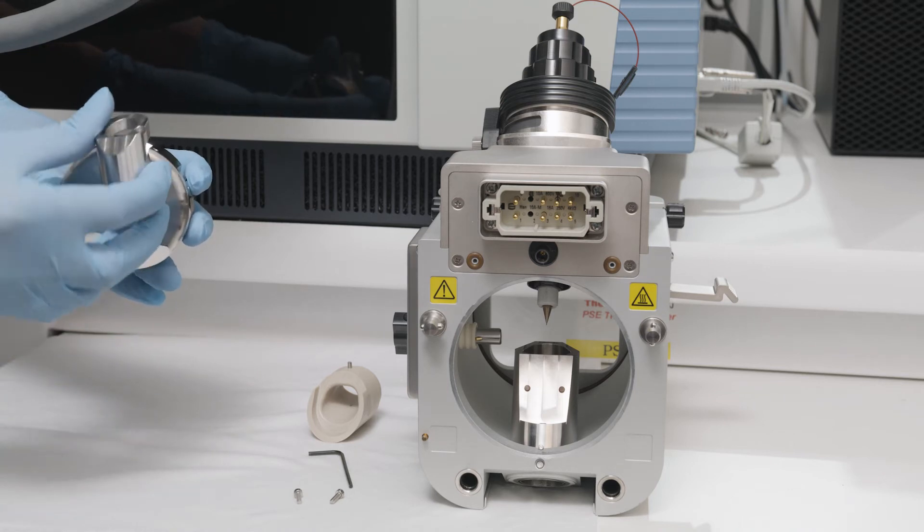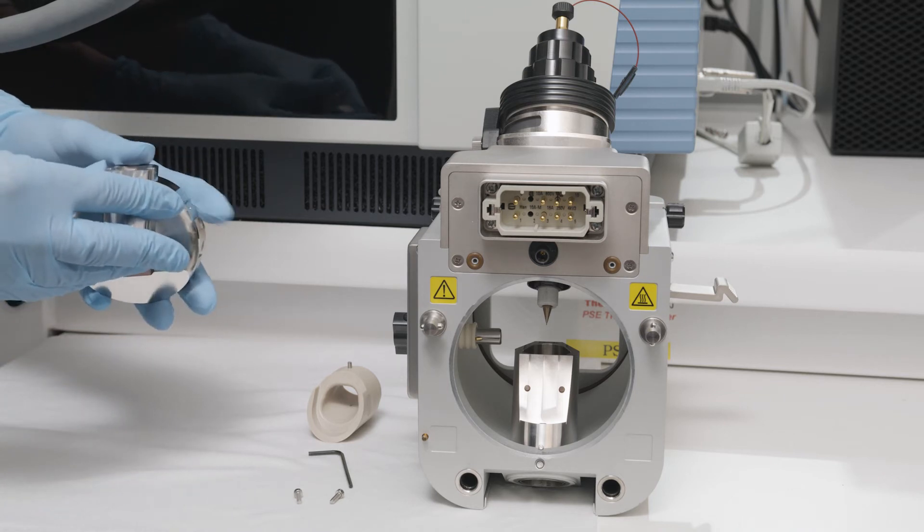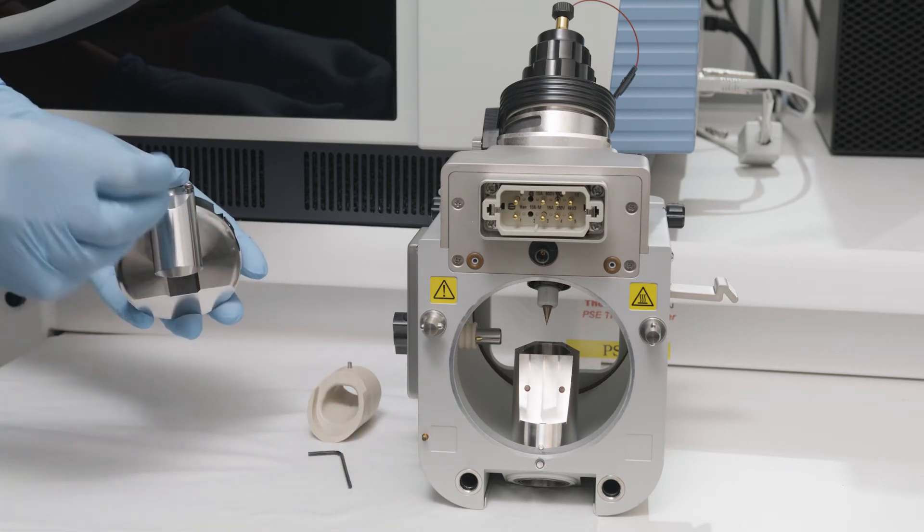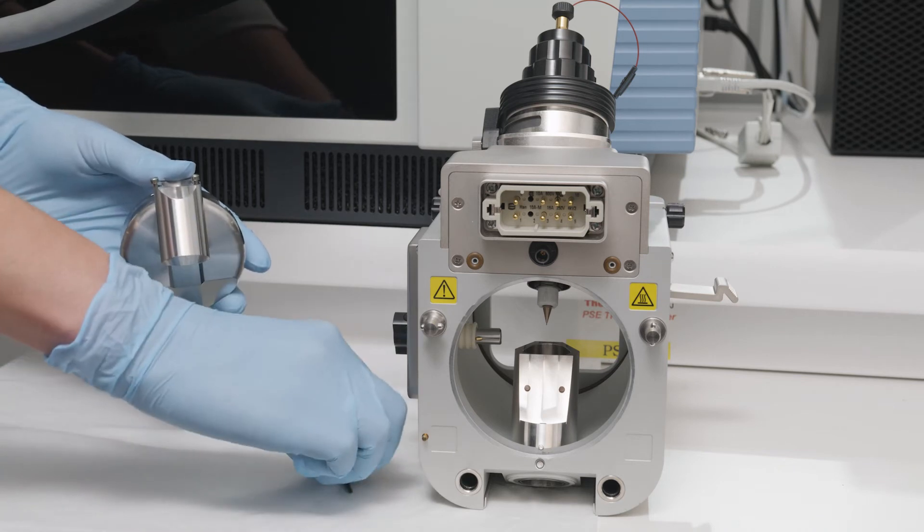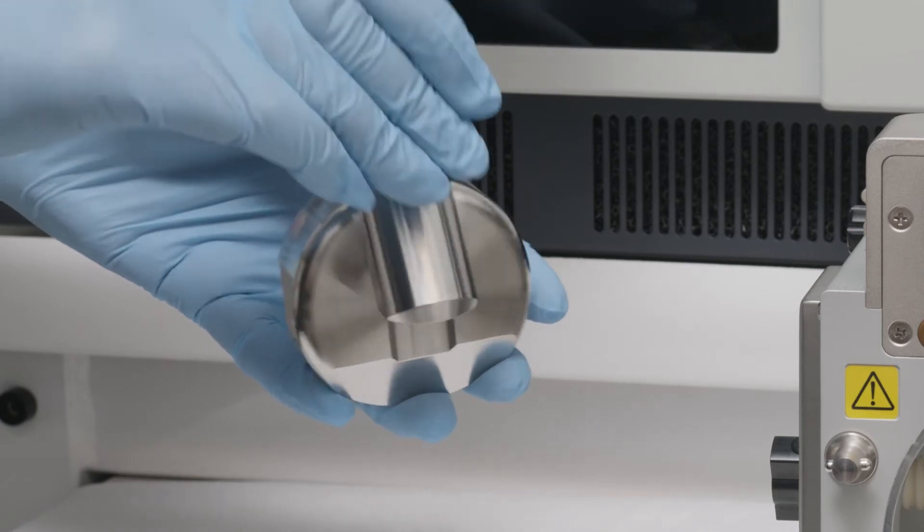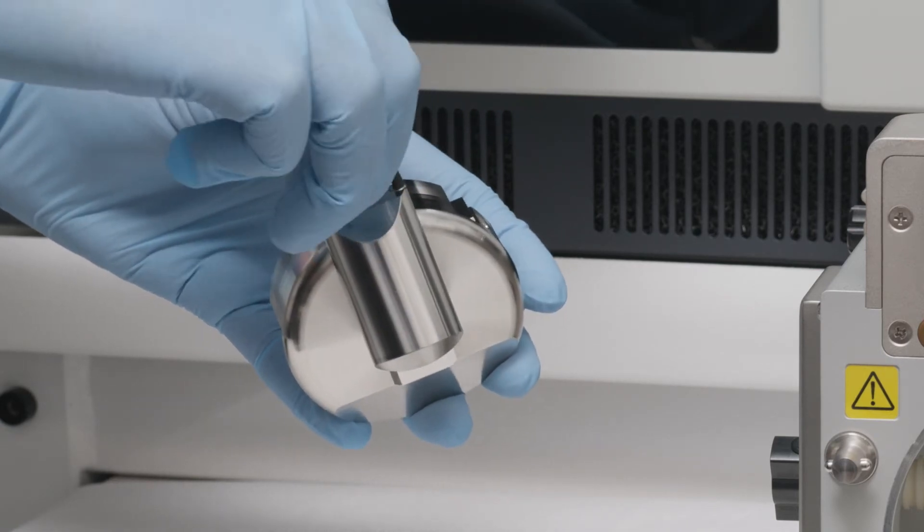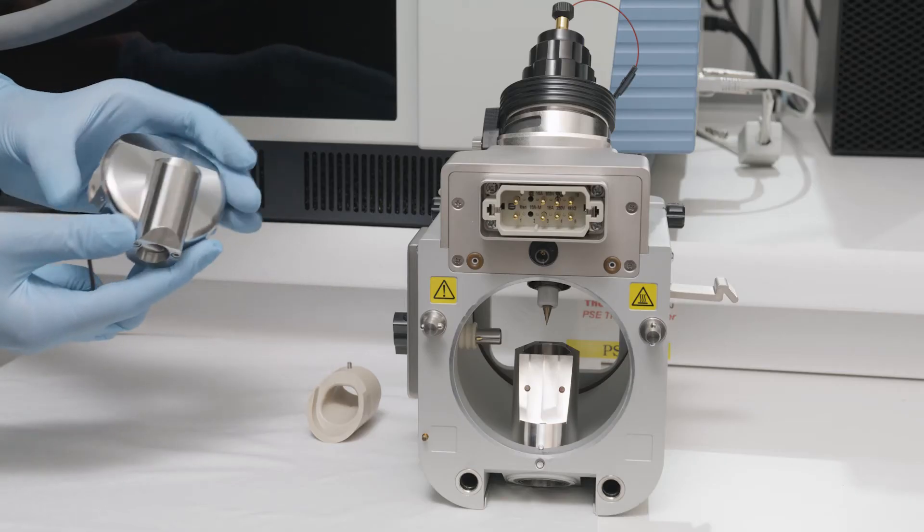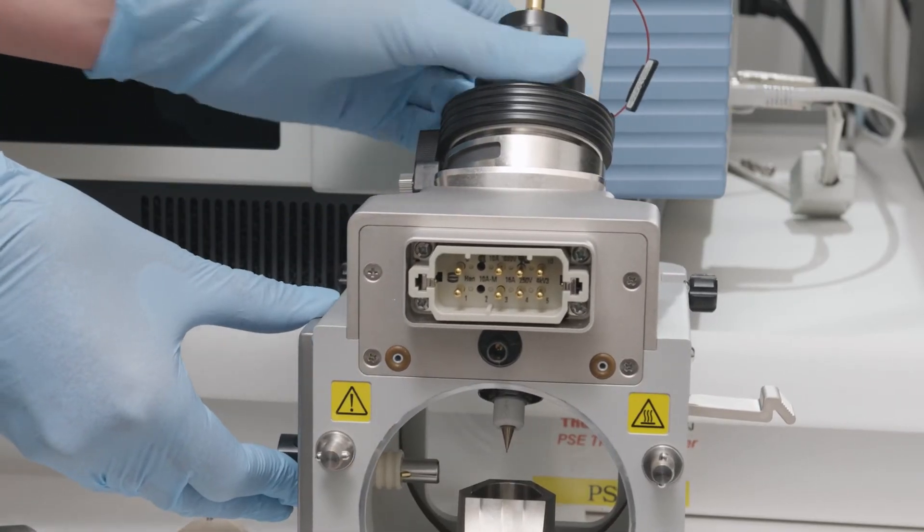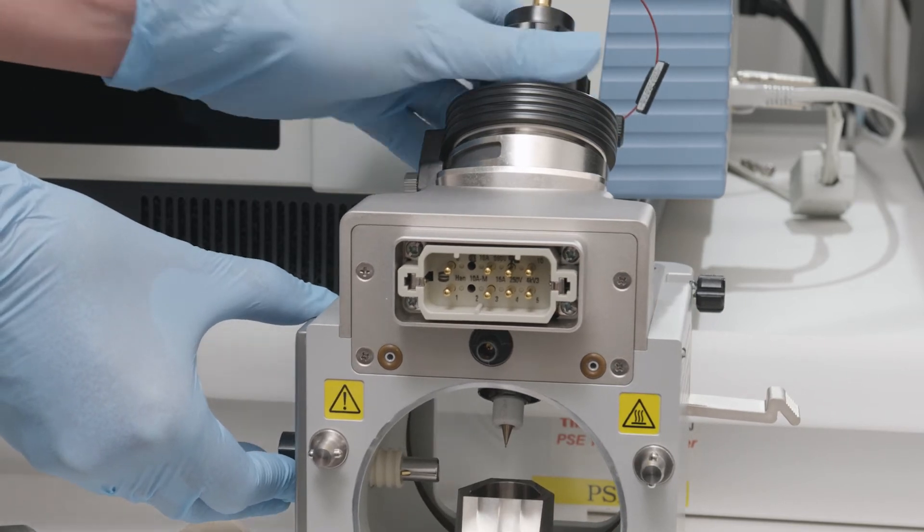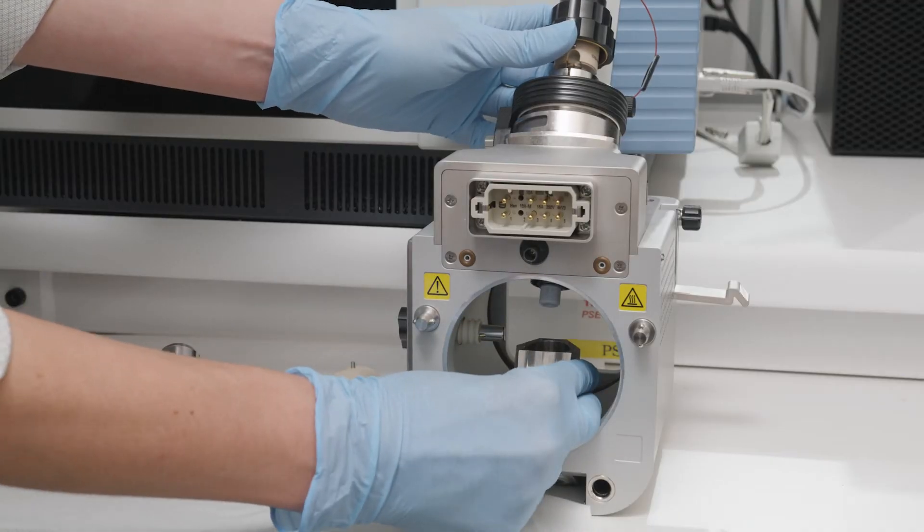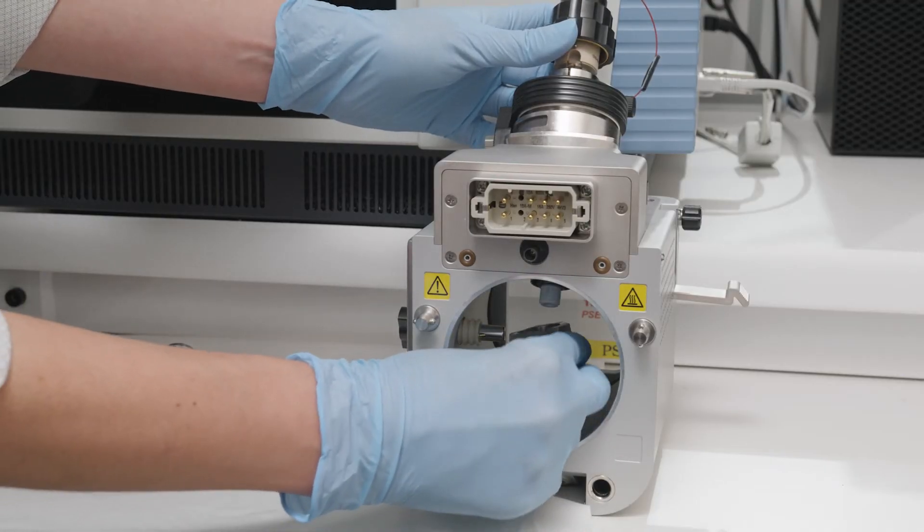Use the two supplied screws and two-millimeter hex key to attach the upper FAIMS drain part to the electrode assembly. Remove the sprayer before removing the drain insert. You can then lift out the original lower drain part and replace it with the lower FAIMS drain part.